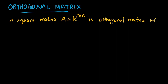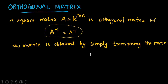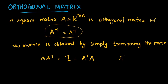Now, the orthogonal matrix: a square matrix A belonging to R^(n×n) is an orthogonal matrix if and only if A inverse equals A transpose. So a square matrix is called an orthogonal matrix when its inverse equals its transpose — the inverse is obtained by simply transposing the matrix. This also means A times A transpose equals the identity matrix, and A transpose times A also equals the identity matrix.